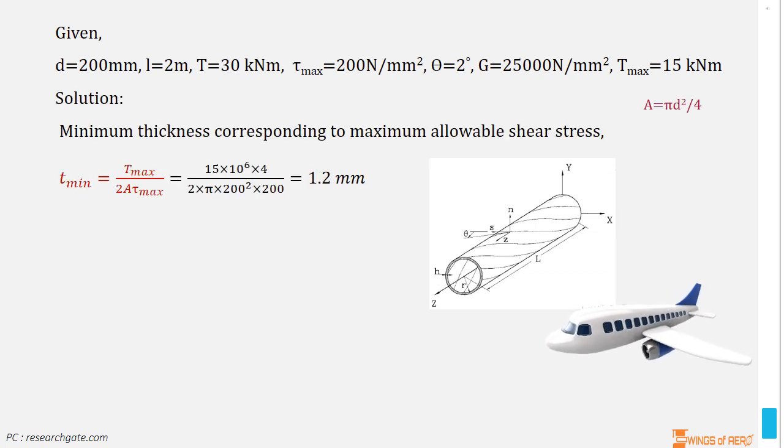Thus, we can write T_min is equal to T_max divided by 2 into A into τ_max. Now, substitute the relevant values and simplify. Thus, T_min is equal to 1.2 mm.